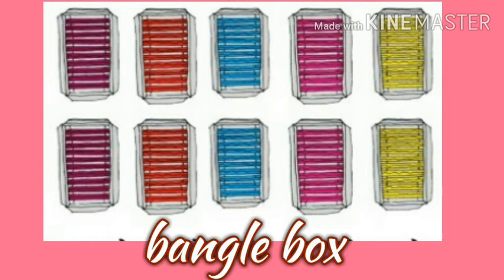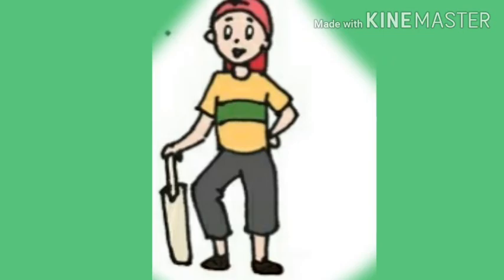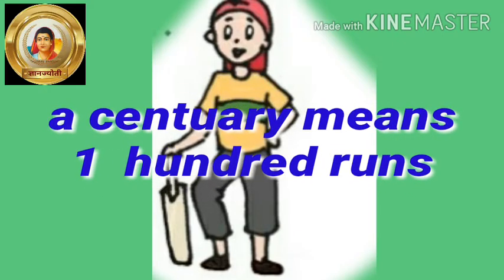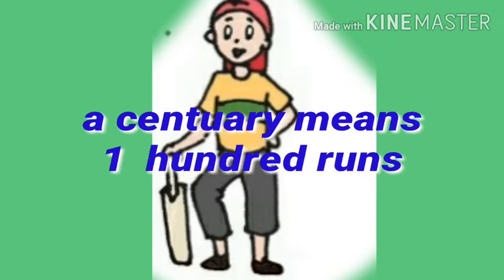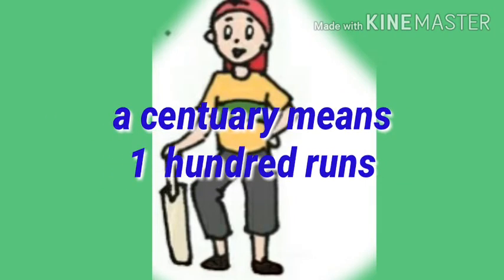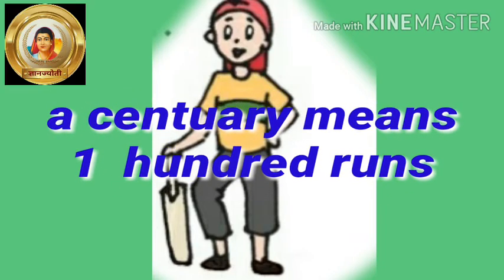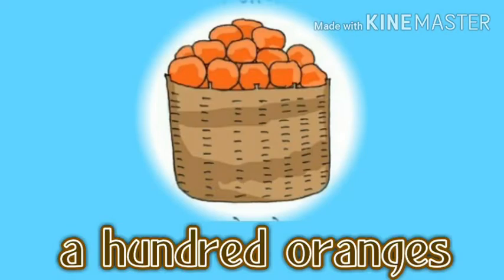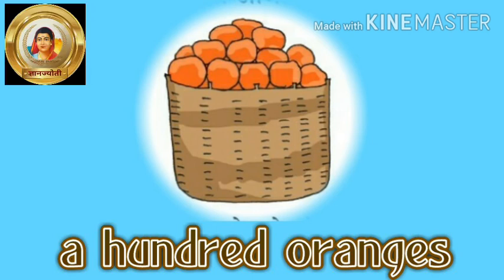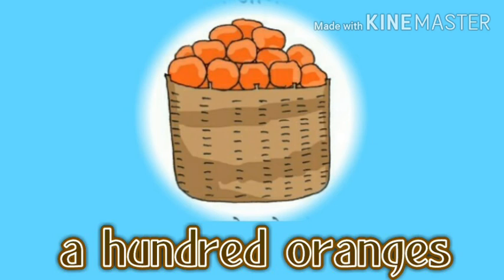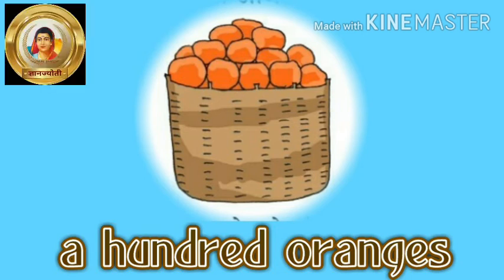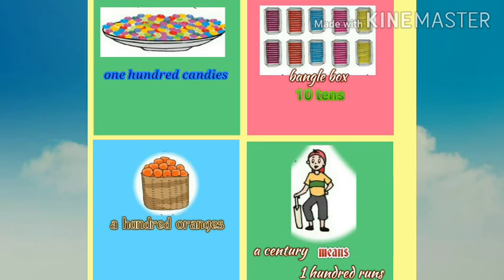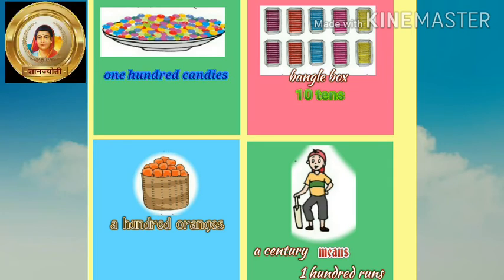Manje he daha bhangdain chee box aahit, aani pratyek box madhe daha bhangdain aahit. So how many are the bangles? They are 10 tens, means 100. Ata ya chitrat ek cricket khilanara mulga dishat aahit. He has completed a century, means he has completed 100 runs - manje yani shambar run purnake le aahit. A century means 100 runs. In the next picture there is a basket, and in the basket there are 100 oranges - manje chit basket madhe shambar santri aahit.